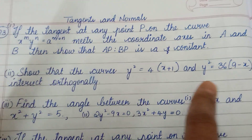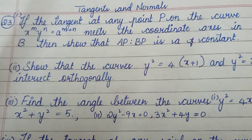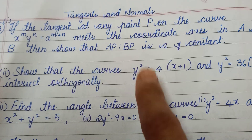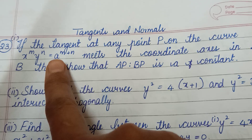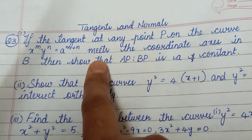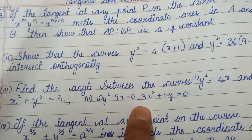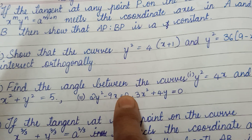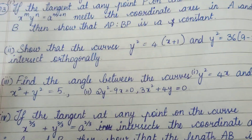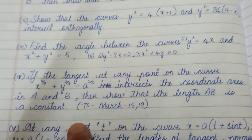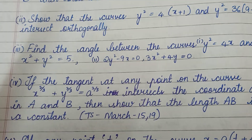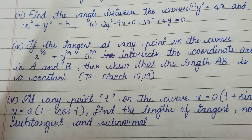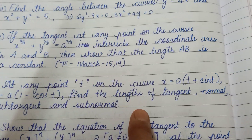Tangents and normals: the curves y square equal to 4x and y square equal to 36 into (9 minus x) intersect. Also important: x power m into y power n equal to a power (m plus n). The angle between the curves — there is a 20% chance. x power 2 by 3, y power 2 by 3 equal to a power 2 by 3 — March 2019. This is also important.